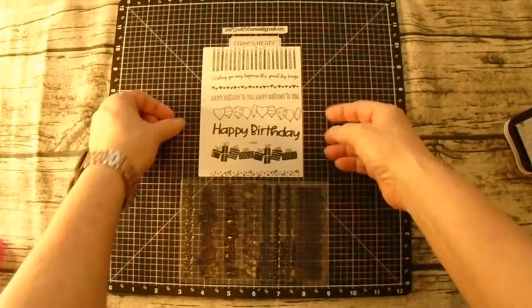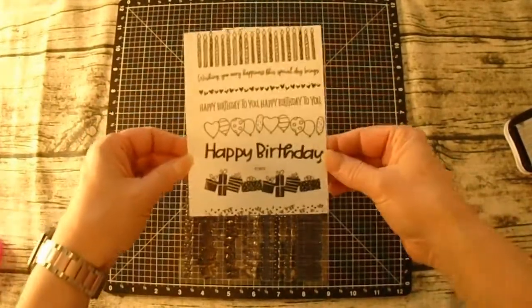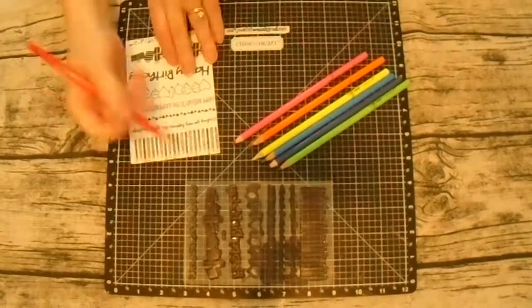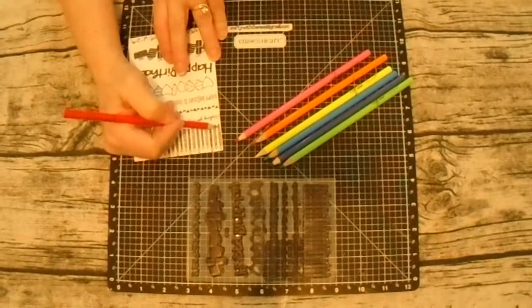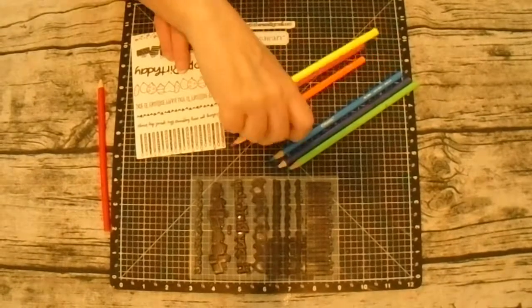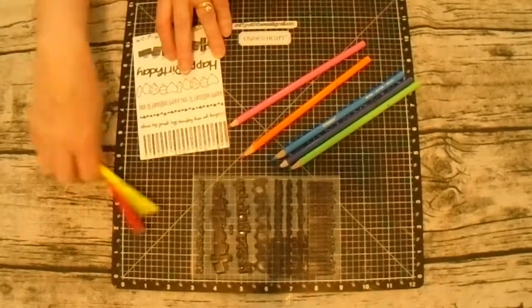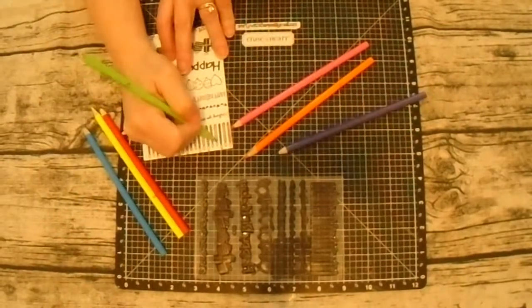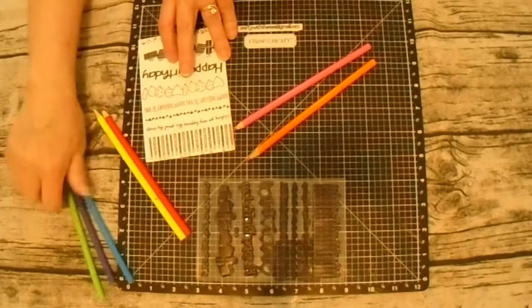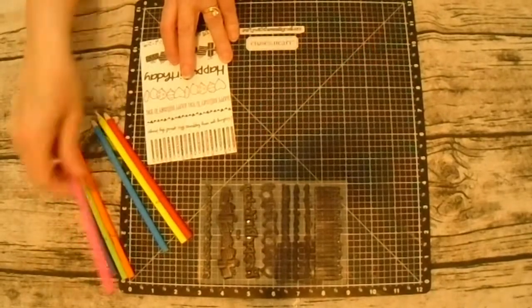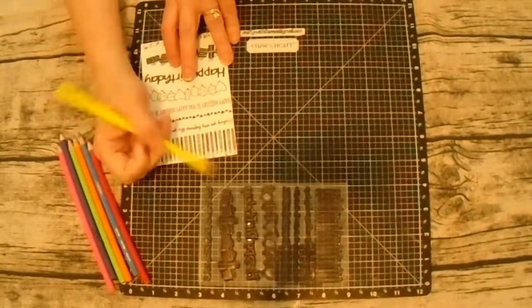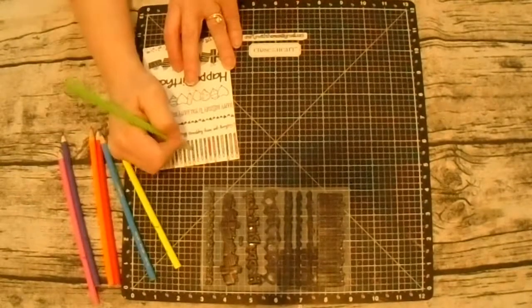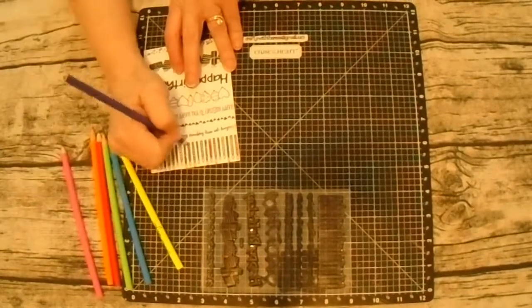I'm taking the colored pencils, using the bright colors, and coloring the candles because they're going to go on our first card. I went with rainbow colors on the candles and then the balloons with secondary colors: purple, orange, and green.